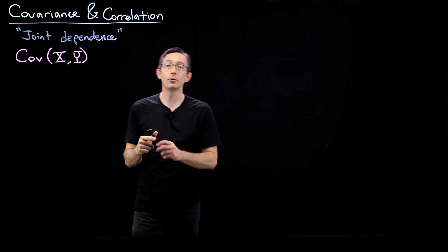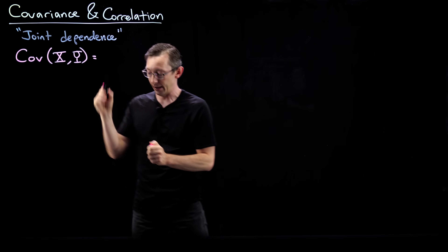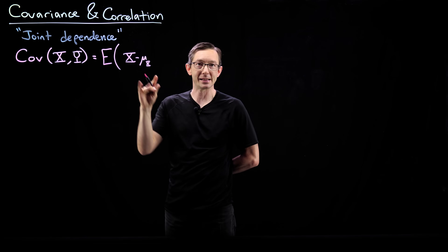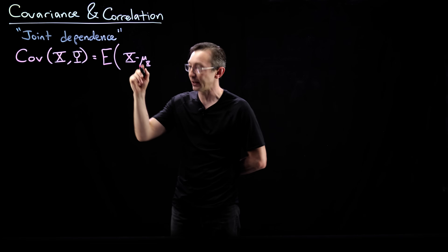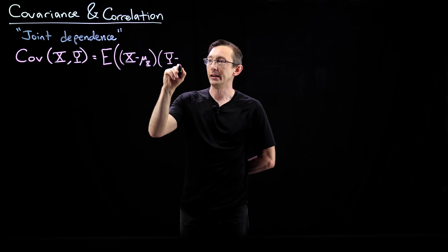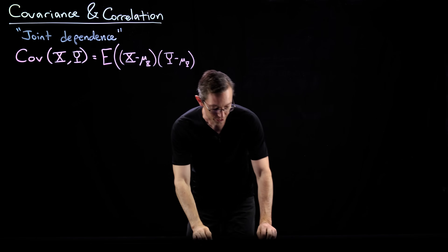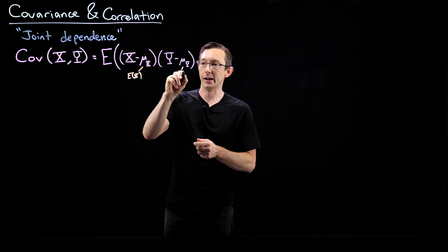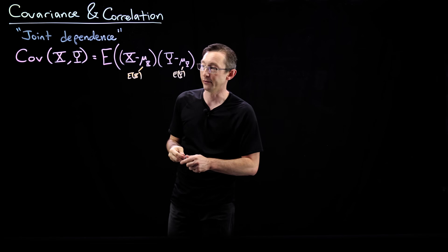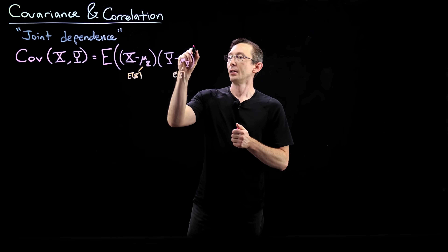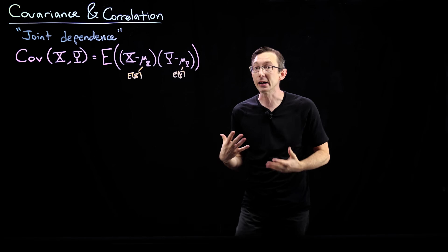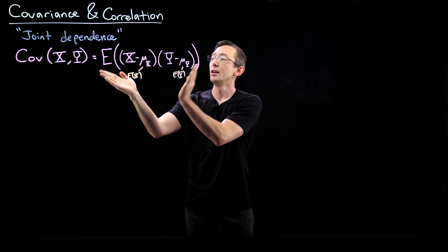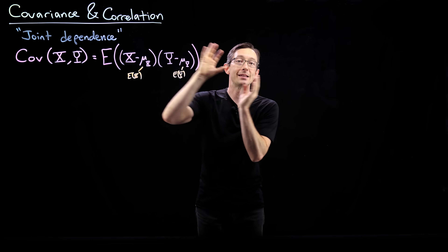The covariance of two random variables x and y is the expected value of x minus its mean — we'll call that mu sub x — times y minus its mean. Mu x is the expectation value of x and mu y is the expectation value of y. You'll notice this is almost identical to the definition of variance: the variance of x is the expectation of (x minus its mean) squared. If I plug in two copies of x, I recover the variance of x.